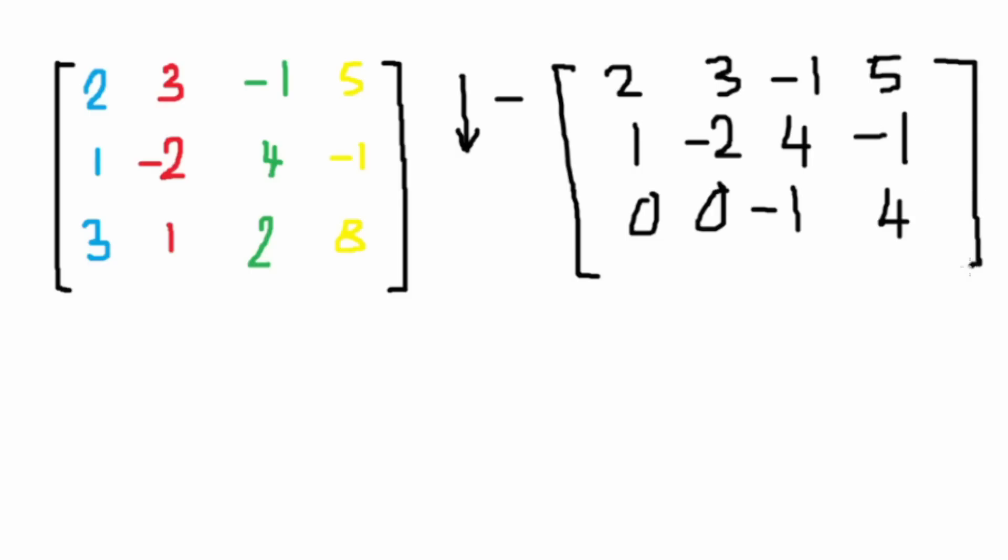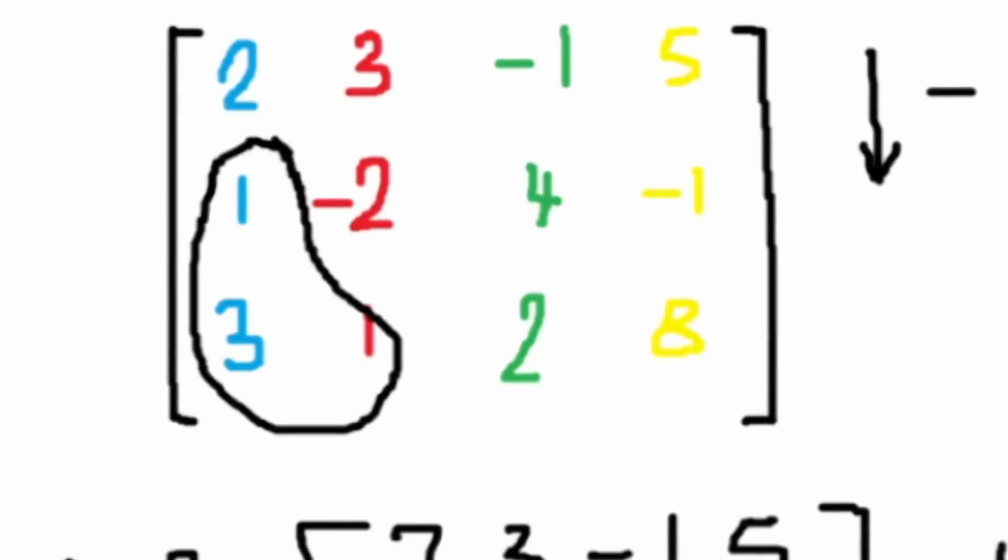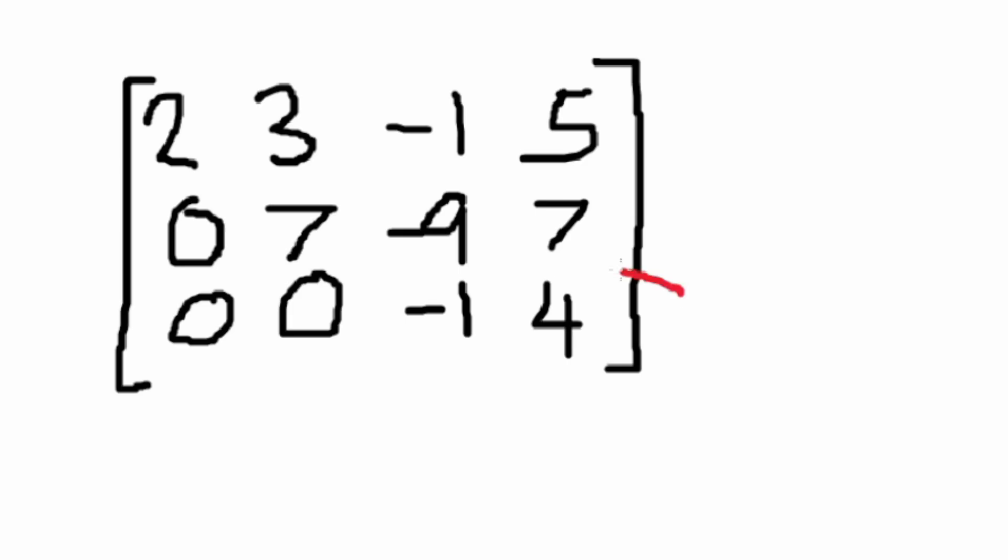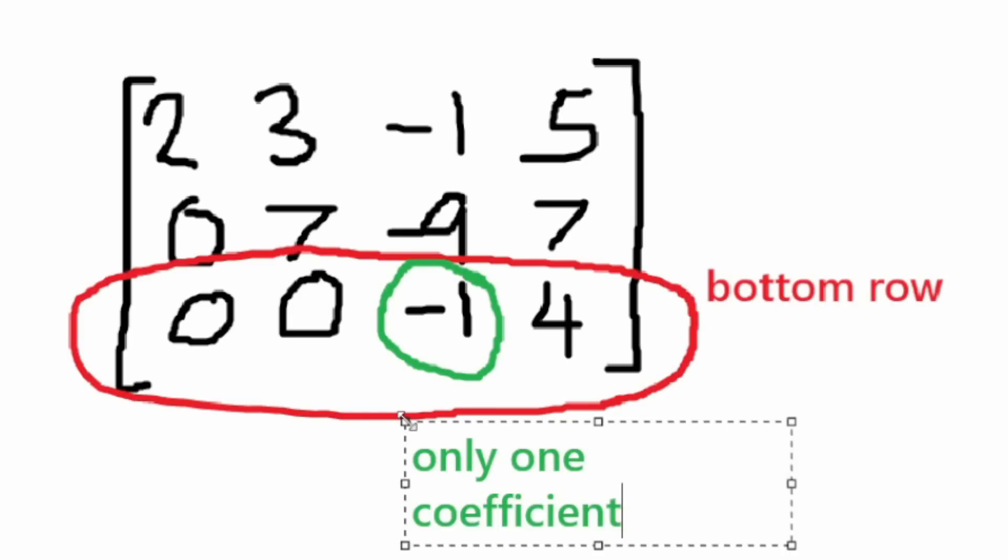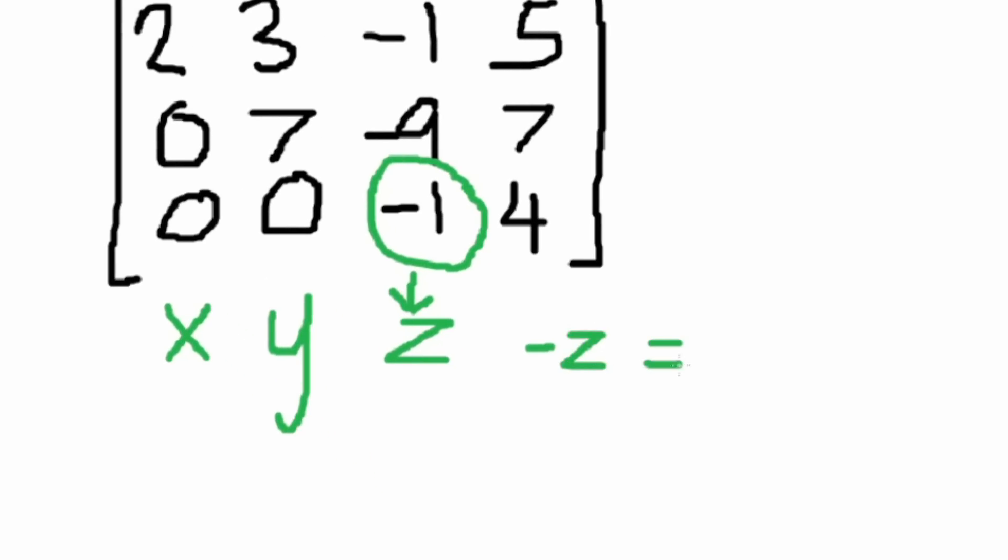The point of doing a series of adding, subtracting, basically just messing around with the equations, is to make the bottom left three values, these ones here, equal to zero. We do this so that the bottom row just has one coefficient that isn't zero, the coefficient of z, and so we can automatically have one of the solutions.